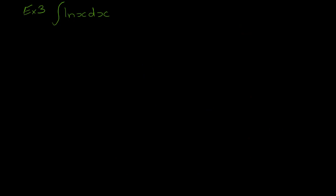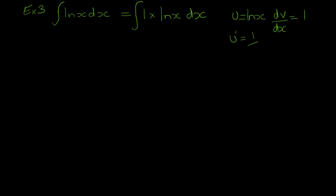As promised, here's how to integrate ln(x). The secret is to rewrite it as a product: 1 · ln(x), since that's the only option available. As mentioned previously, if ln(x) is one of the two factors, we take it as u. So u = ln(x) and dv/dx = 1. Differentiating ln(x) gives du/dx = 1/x, and integrating the other side gives v = x.